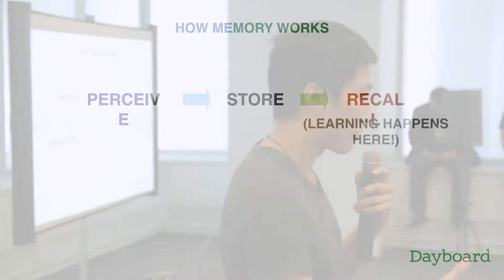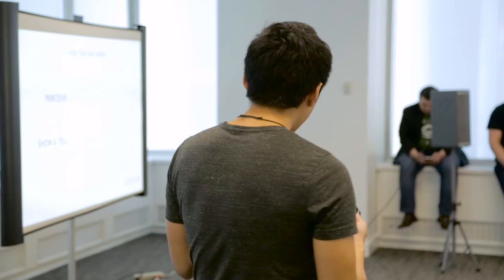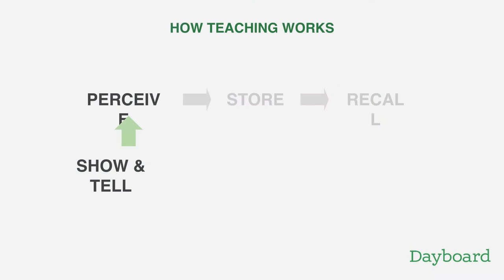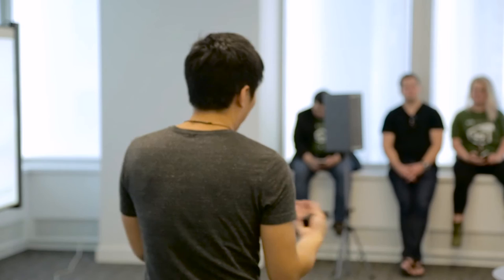There are three distinct phases on the teaching side as well. The first step in understanding a teaching process is show and tell — where you're the sensory input for the other side. For example, I'm here telling you there's some learning theory going on, and that's where it starts. The next phase is you have to explain that process. Explaining means drawing connections to things that people already understand.